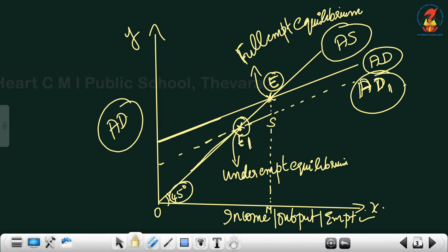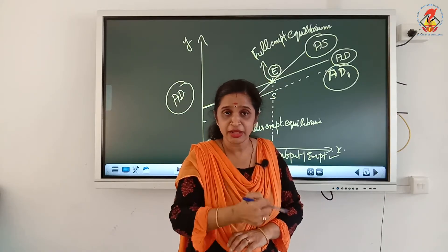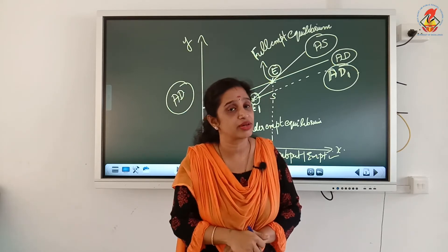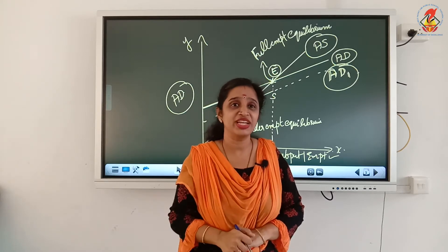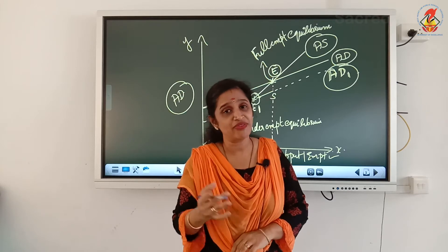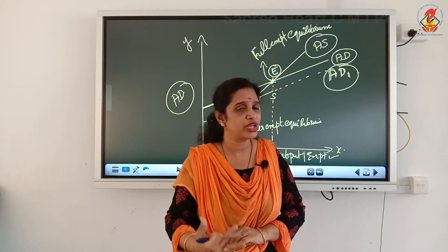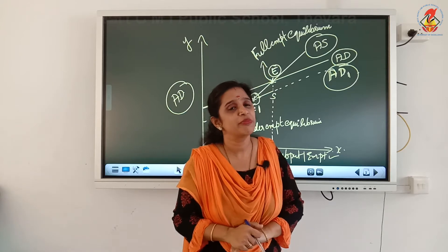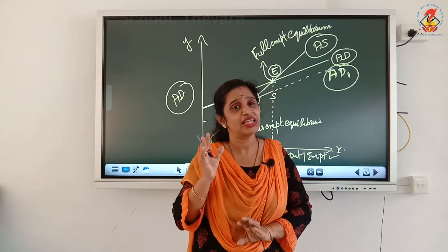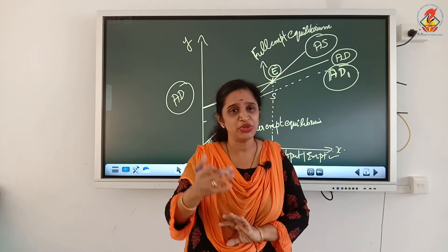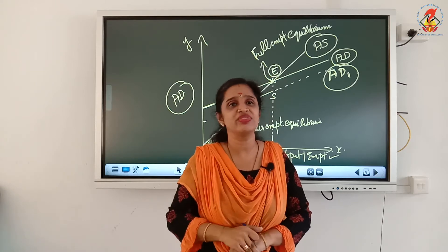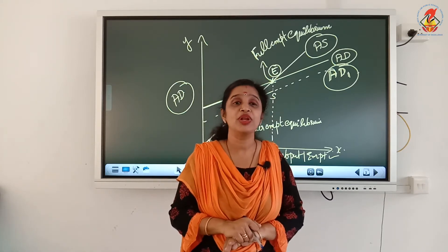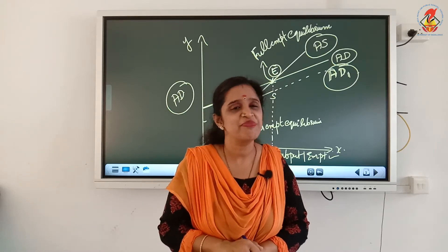Here aggregate demand is less than aggregate supply, yet point E1 is also an equilibrium point because the new aggregate demand curve AD1, which has shifted downwards, still intersects the existing aggregate supply curve. That equilibrium point is known as underemployment equilibrium — as distinct from full employment equilibrium and overfull employment equilibrium. Even when the aggregate demand curve shifts downward due to its shortfall, it intersects the aggregate supply curve and an equilibrium is maintained at the underemployment equilibrium.